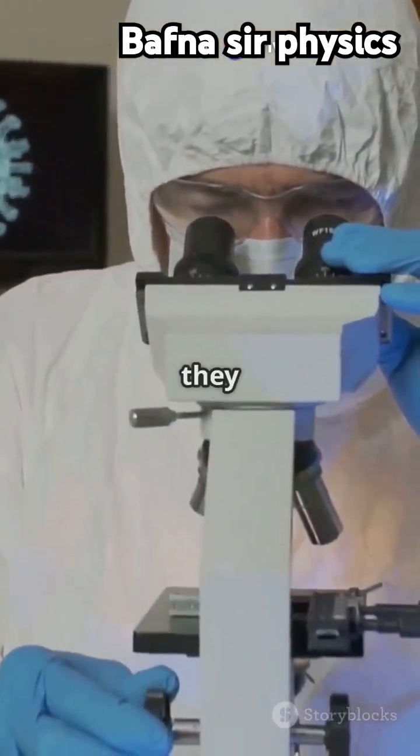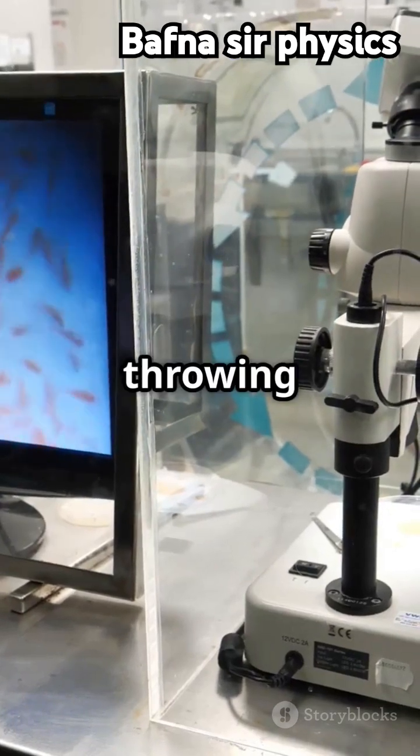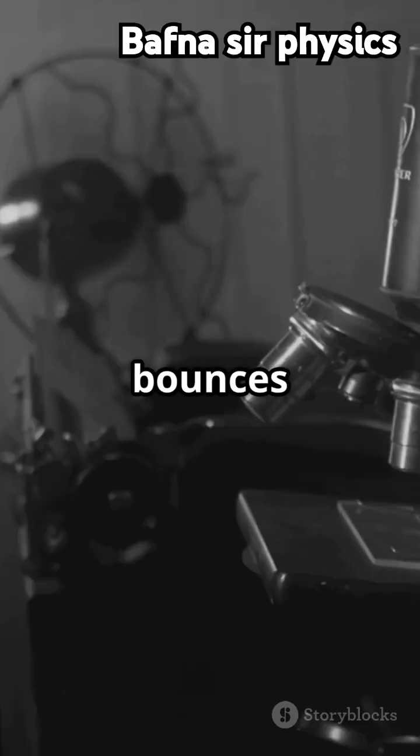When electrons hit the sample, they bounce off and create an image we can see. It's like throwing a ball at a wall and seeing how it bounces back to understand the wall's surface.